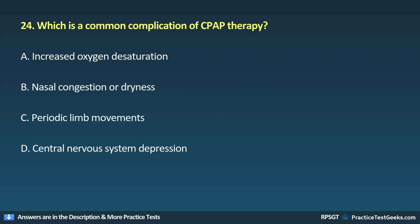Question 24: Which is a common complication of CPAP therapy? A. Increased oxygen desaturation, B. Nasal congestion or dryness, C. Periodic limb movements, D. Central nervous system depression.